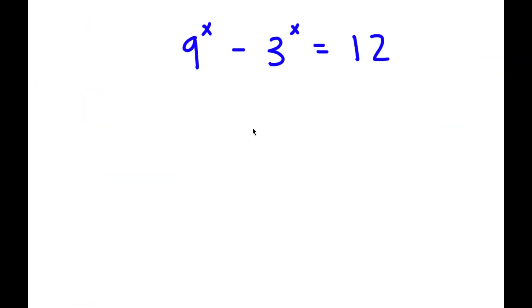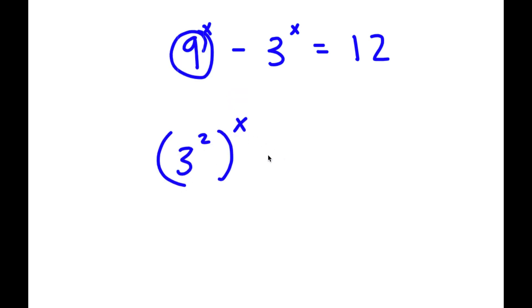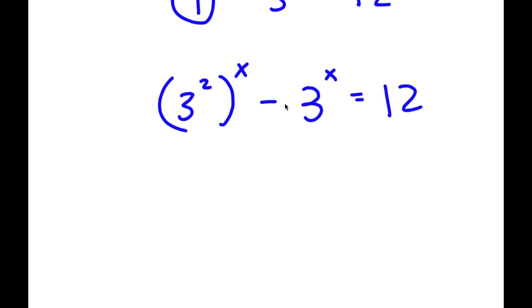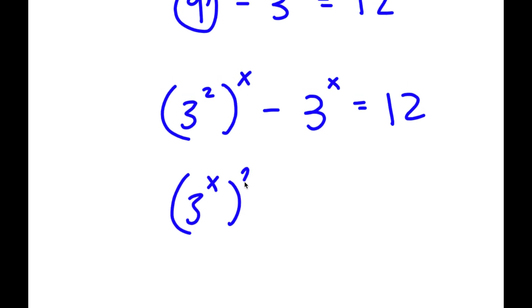So in this problem, I have 9 to the power of x minus 3 to the power of x is equal to 12. To solve this, I'm going to first start by rewriting 9 as 3 squared. So now I have 3 squared to the power of x minus 3 to the power of x is equal to 12. I'm going to rewrite 3 to the power of 2 to the power of x as 3 to the power of x to the power of 2.